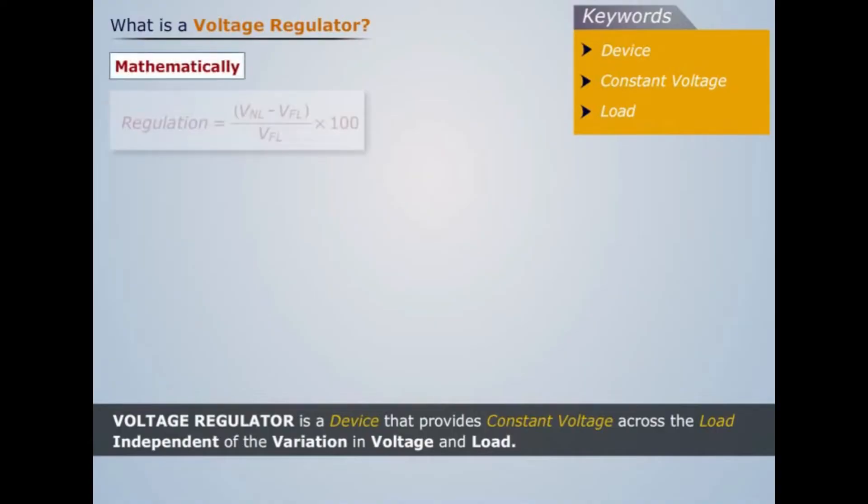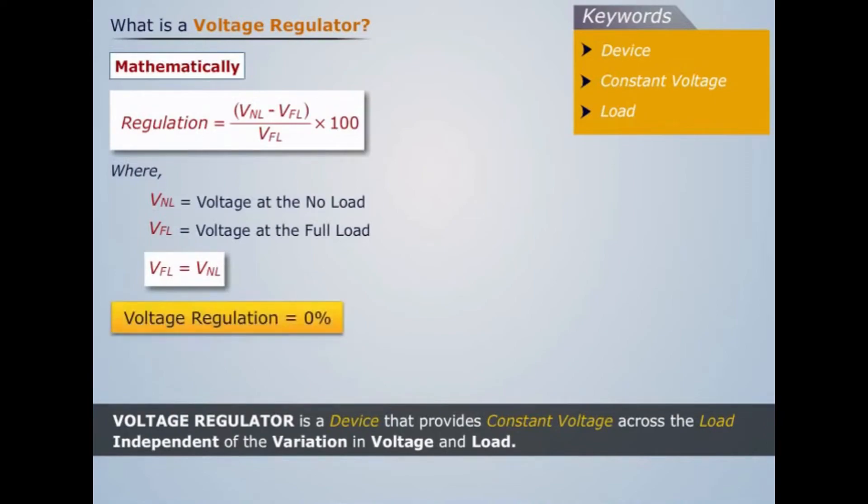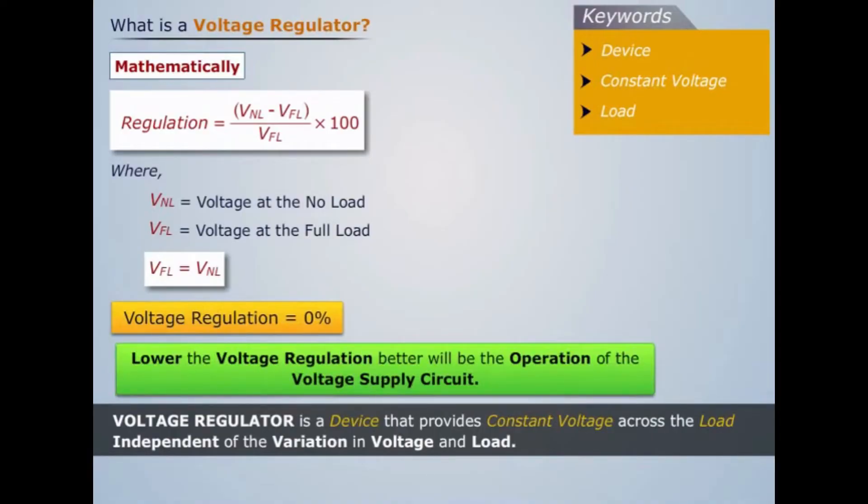Mathematically, voltage regulation is expressed as shown. Note that if the value of full load voltage (VFL) is equal to the no load voltage (VNL), then the voltage regulation is 0%, which is the best expected. Lower the voltage regulation, better will be the operation of the voltage supply circuit.